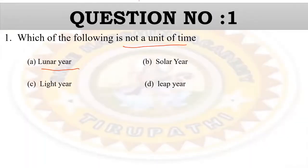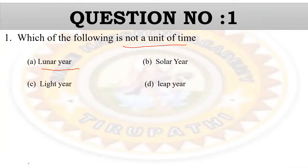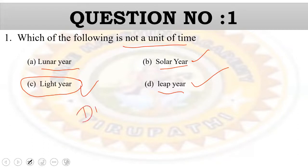Now we are looking at this question. Which of the following is not the unit of time? Lunar year is a unit of time. Solar year is also a unit of time. Leap year is also a unit of time. Light year is not a unit of time — it is the unit of distance. The answer is C.